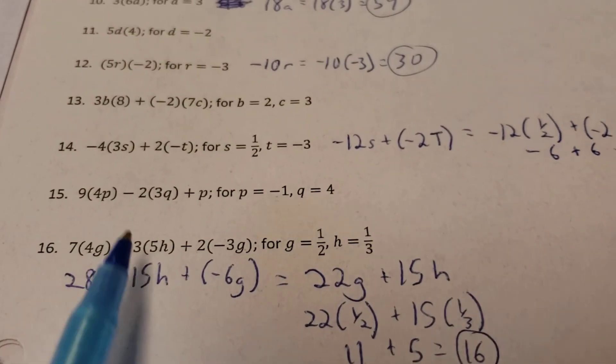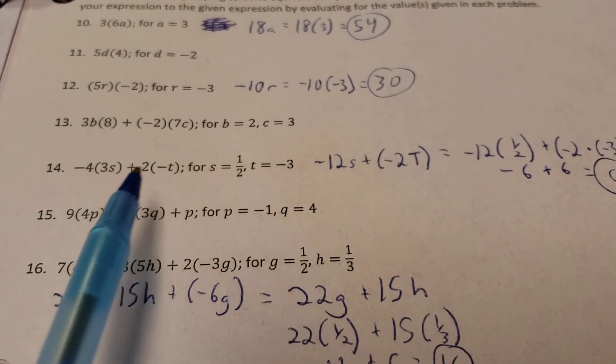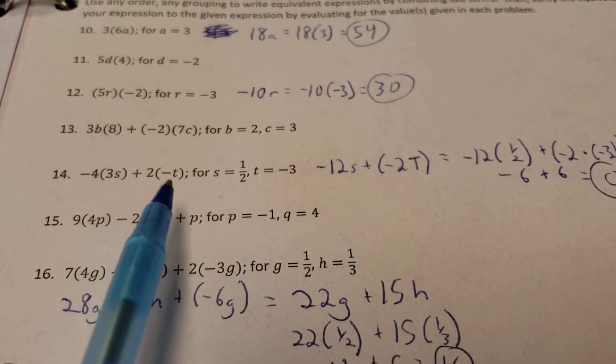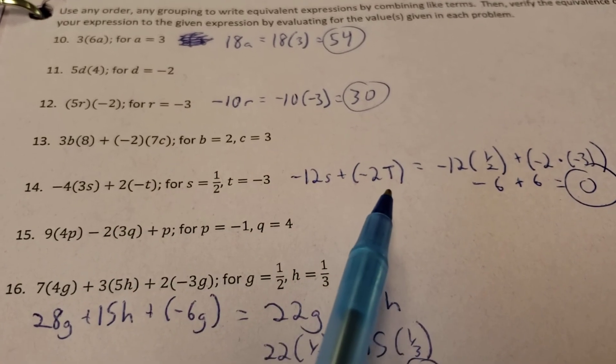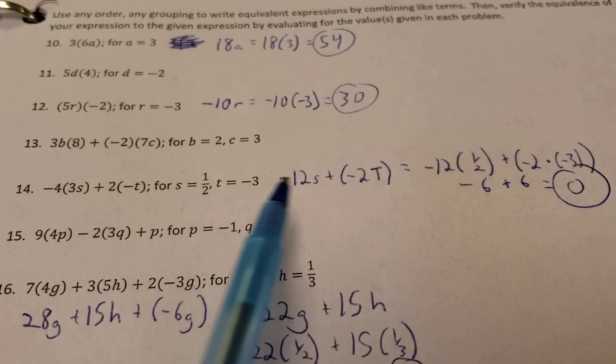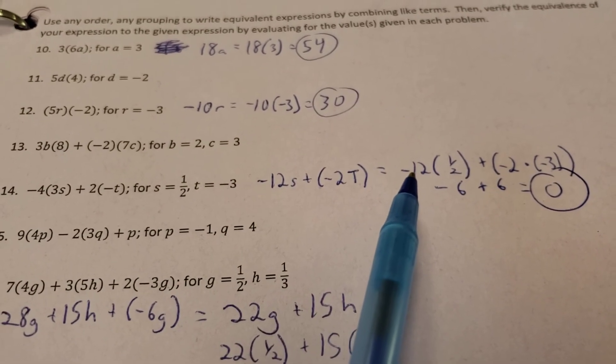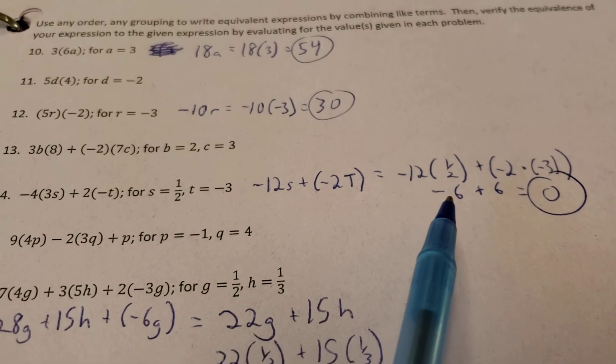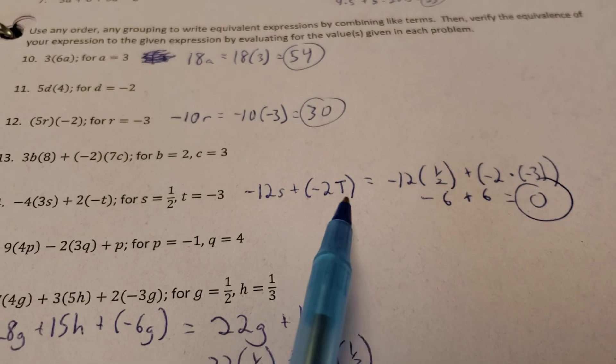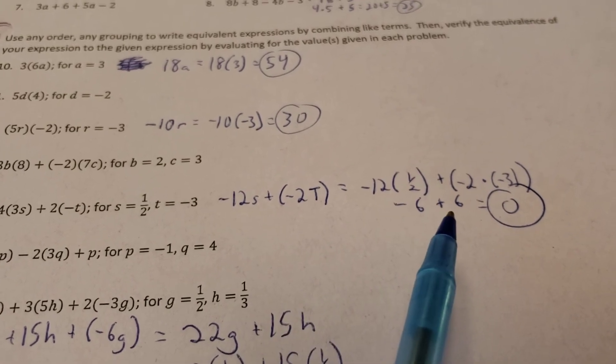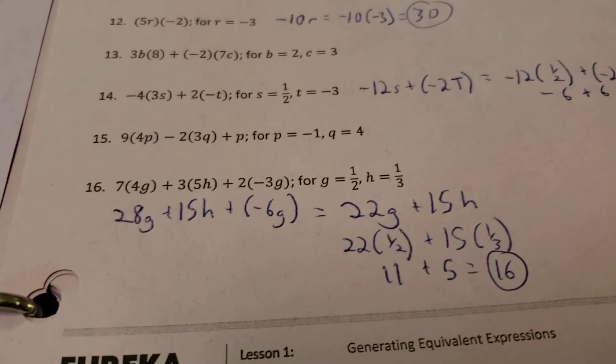Number 14. I got negative 4 times 3s. So it's a negative 12s over here. 2 times a negative, remember, 1 of the t's. So 2 times a negative 1 gives you negative 2 of the t's. And then I can substitute in s equaling a half and t equaling negative 3. Well, a negative 12 times a 1 half, well, a half of negative 12 is a negative 6. And then a negative 2 times a negative 3 gives me a positive 6. So negative 6 plus 6 leaves me a 0.